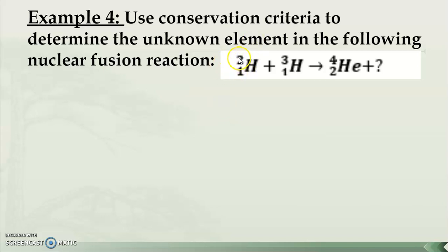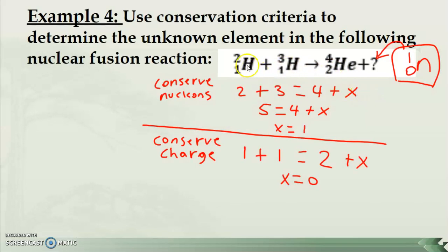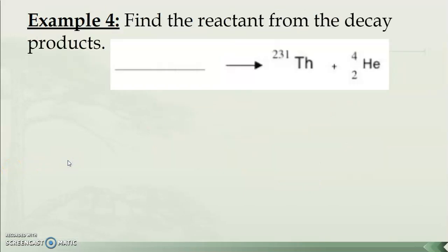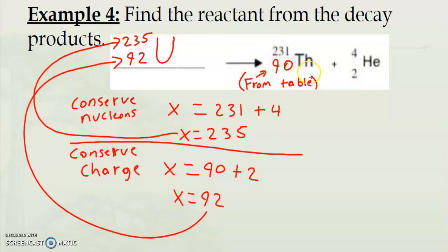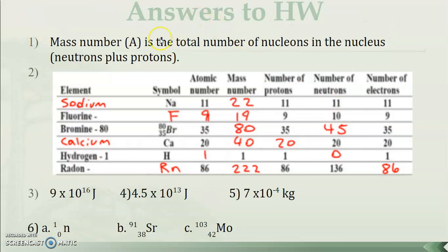For the fusion example: two hydrogen isotopes with mass numbers 2 and 3 combine — 2 + 3 = 5 total nucleons on the left. The helium product accounts for 4, so the remaining particle has mass number 1 and no charge (since charge is already conserved) — that's a single neutron. For alpha decay of thorium: thorium has atomic number 90; 90 + 2 = 92, which is uranium. Adding 231 + 4 gives mass number 235, so the parent is uranium-235.